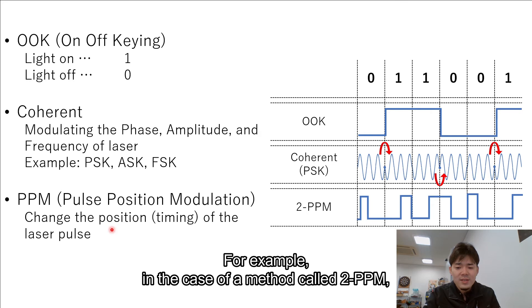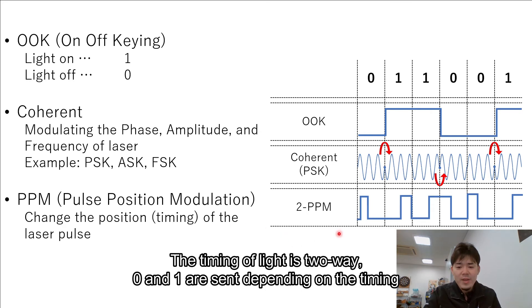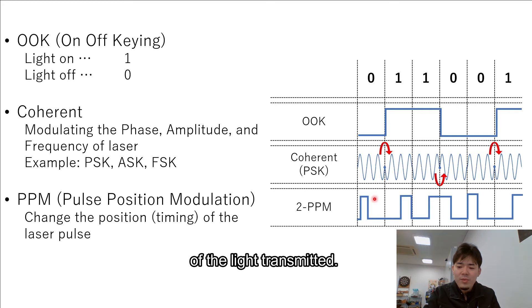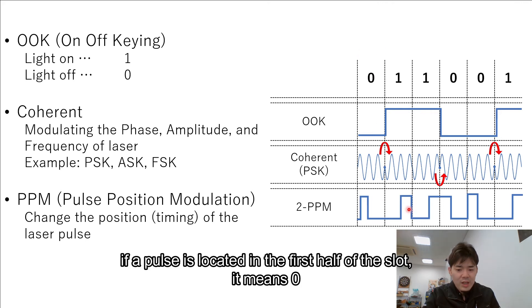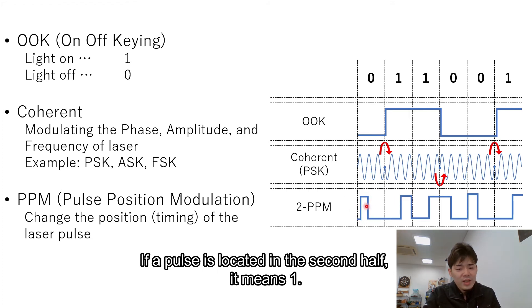For example, in this case of a method called 2-PPM, the timing of the light is two-way. 0 and 1 are sent depending on the timing of the light transmitted. For example, in this figure, look at each bit slot. If a pulse is located in the first half of the slot, it means 0. And if a pulse is located in the second half of the slot, it means 1.